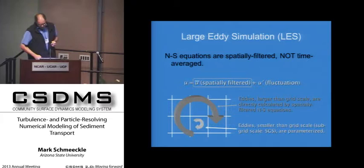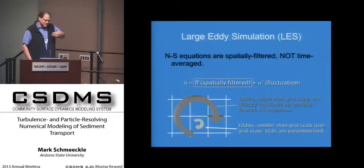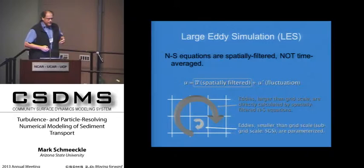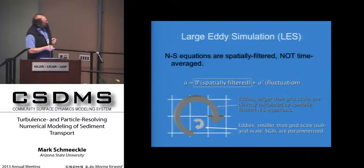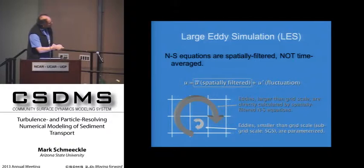On to what I really want to talk about, which is coupling large eddy simulation models of turbulence with particle models to develop simulations that we can actually use to substitute for laboratory experiments. A lot of you know what large eddy simulation is — it's basically directly calculating the Navier-Stokes equations at scales larger than the grid. We filter those equations spatially, and we still have to parameterize what's going on at the subgrid scale. Obviously the smaller the grid, the less important the subgrid scale modeling becomes.